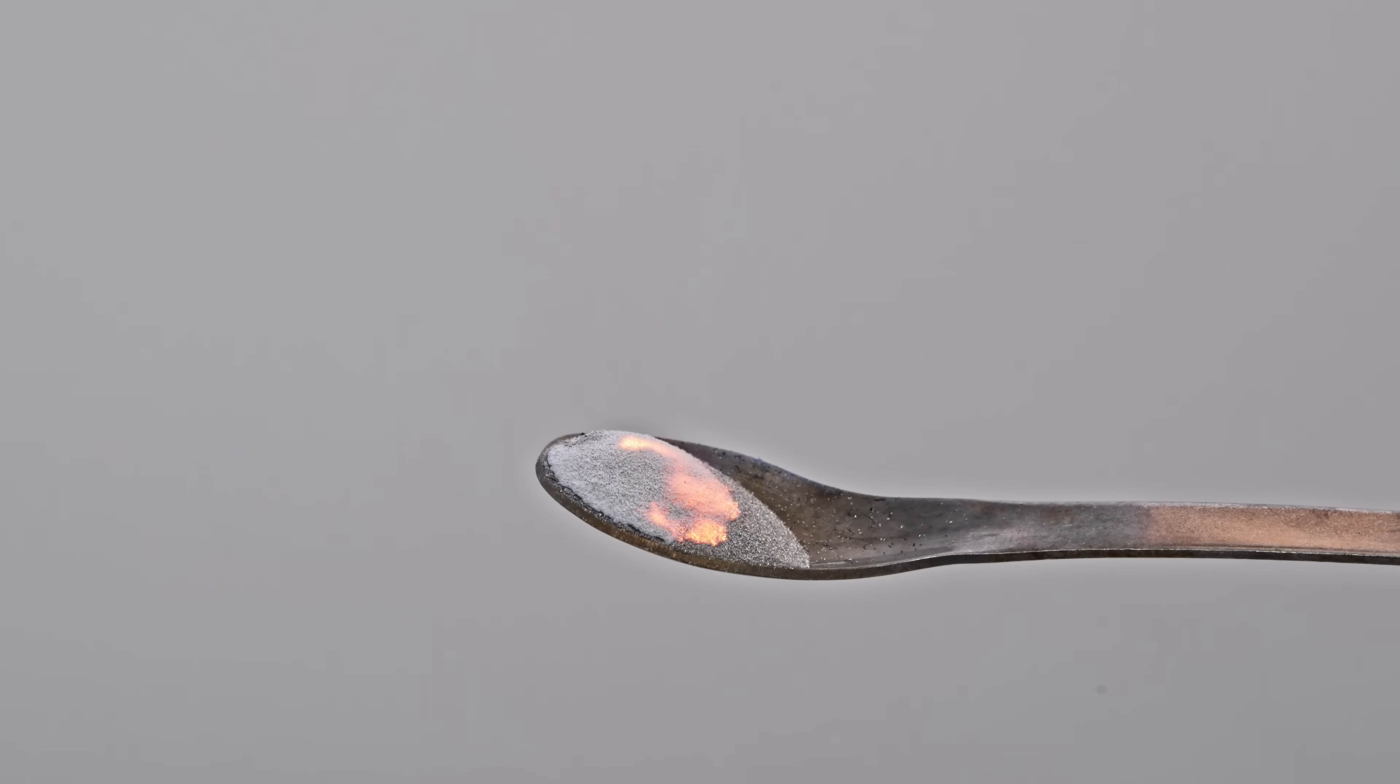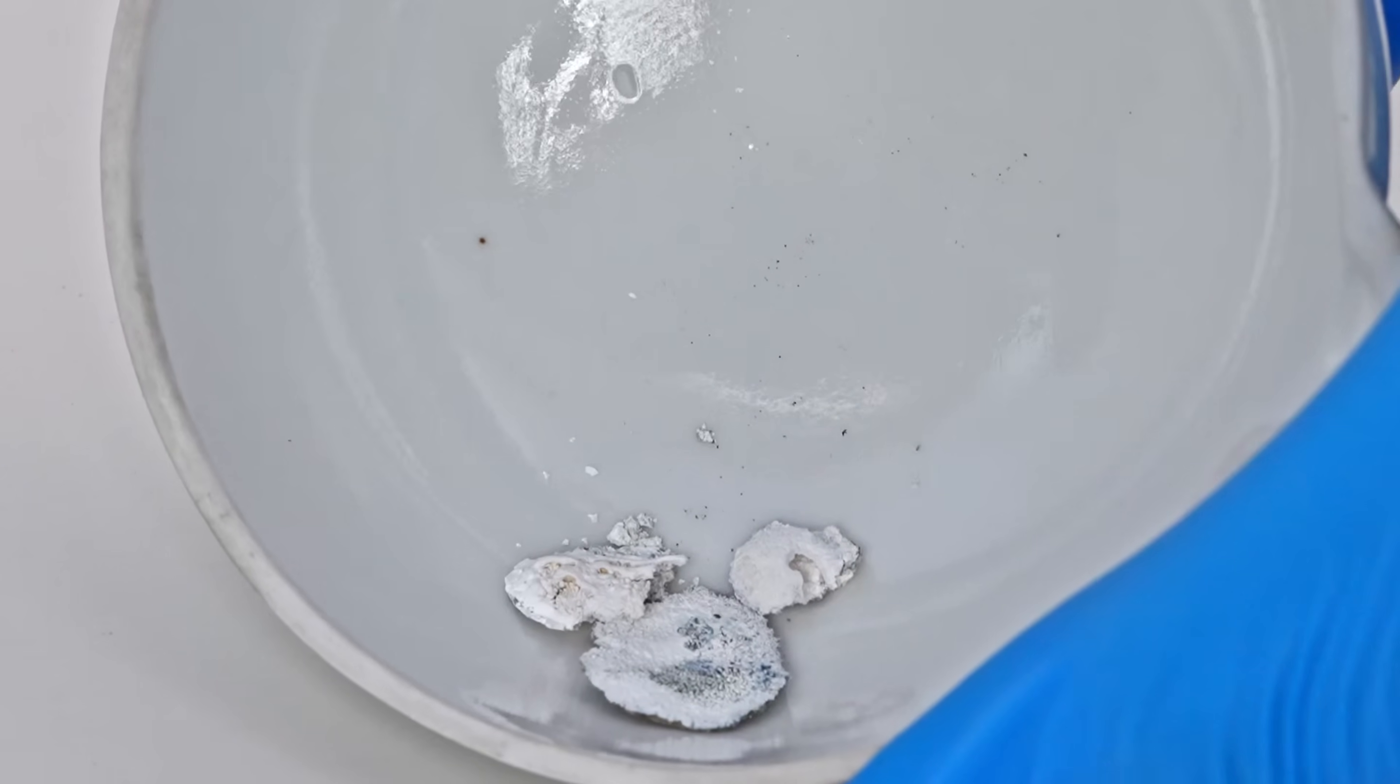When burning, magnesium reaches a very high temperature, and after it burns out, a white powder remains, which is magnesium oxide.